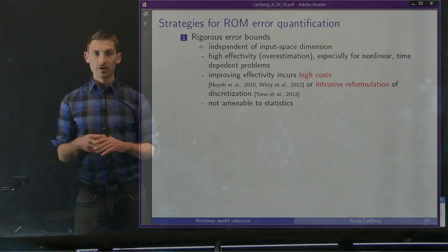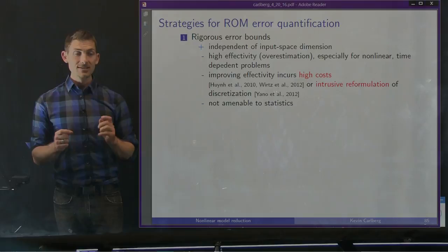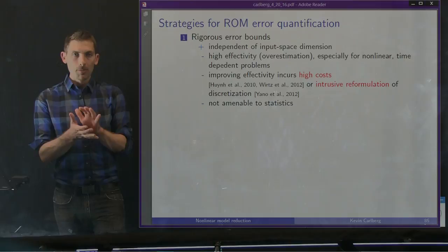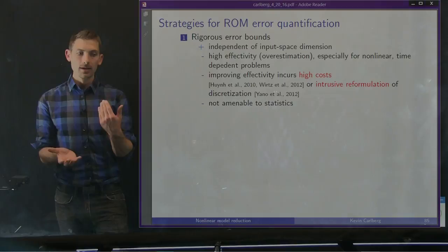In the intrusive reformulation by Masayano and some of his collaborators, as well as Tony Patera and Carson Urban, the idea is they actually develop a space-time discretization for the original PDE. And they show that applying the reduced spaces method to that space-time model yields an error bound that grows much more slowly in time.